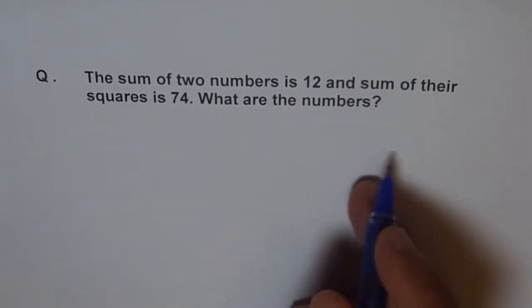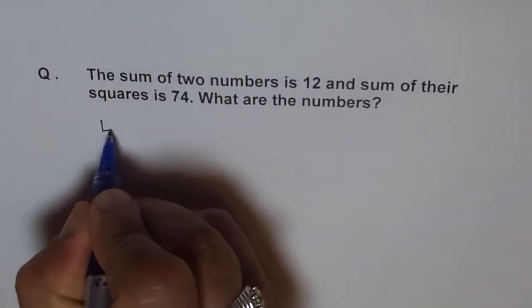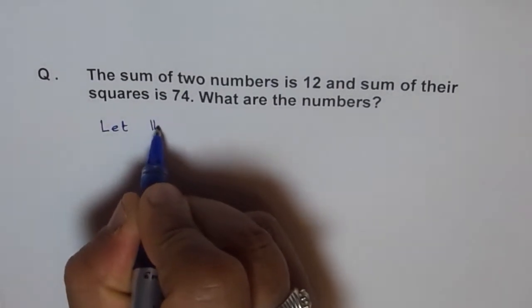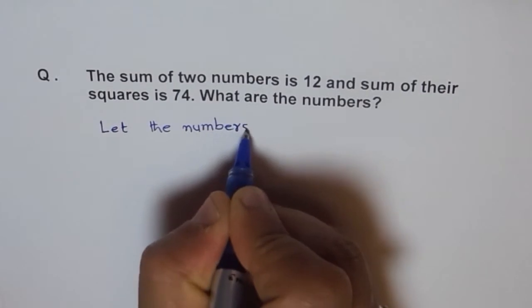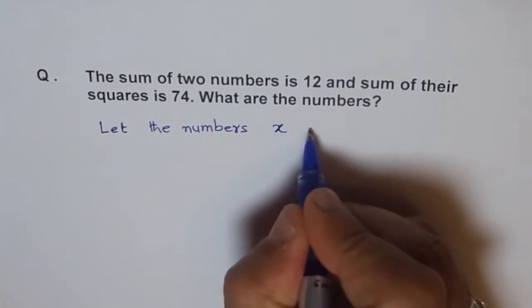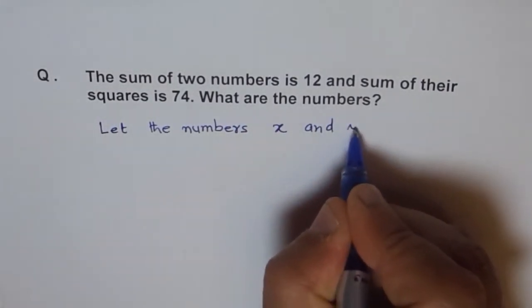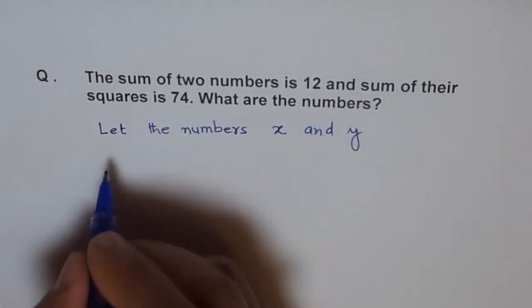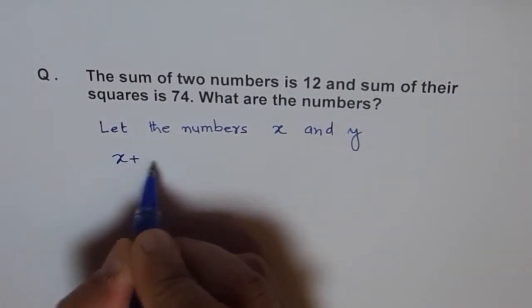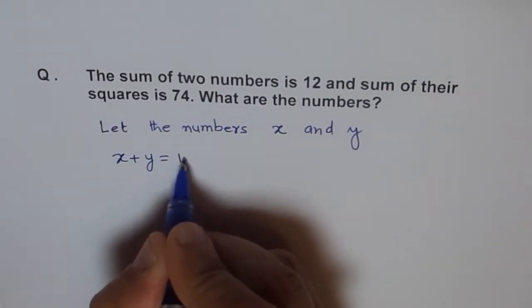Let's first define our variables. Let the numbers be x and y. In that case, sum of two numbers is 12. That means x plus y equals to 12.